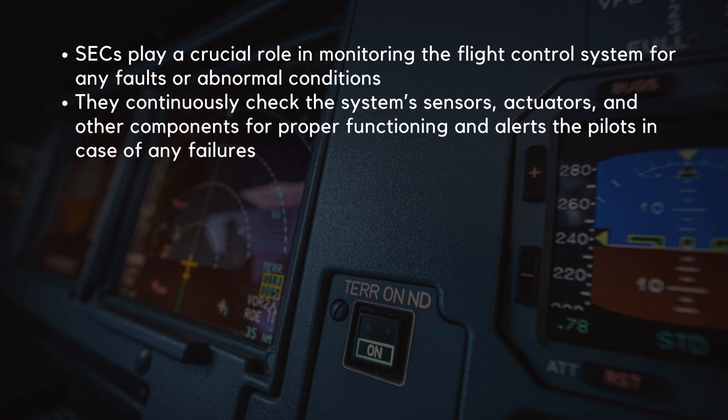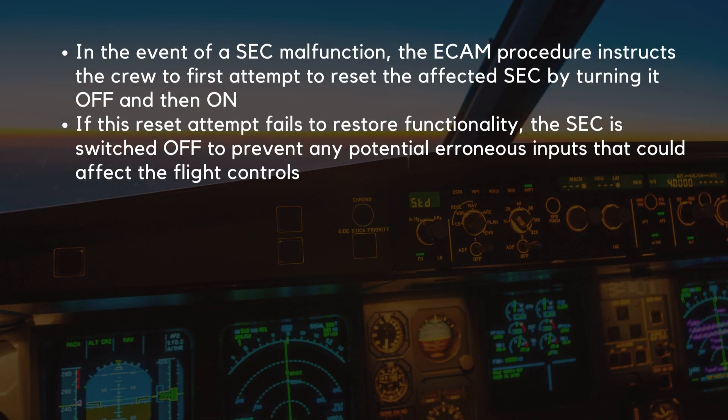The SECs play a crucial role in monitoring the flight control system for any faults or abnormal conditions. They continuously check the system's sensors, actuators, and other components for proper functioning and alert the pilots in case of any failures. In the event of a SEC malfunction, the ECAM procedure instructs the crew to first attempt to reset the affected SEC by turning it off and then on. If this reset attempt fails to restore functionality, the SEC is switched off to prevent any potential erroneous inputs that could affect the flight controls.